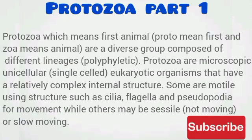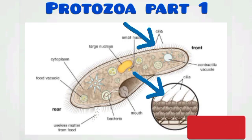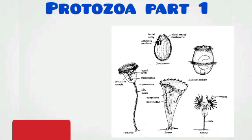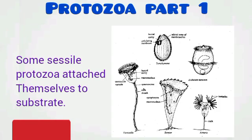The term protozoa is derived from two words: proto meaning first and zoa meaning animal. They are a diverse group of animals which originate from different lineages, making them polyphyletic. Protozoa are microscopic, unicellular, and eukaryotic organisms with a well-defined nucleus and relatively complex internal structure. Some are motile using cilia, flagella, or pseudopodia for movement, while others are sessile or slow-moving.